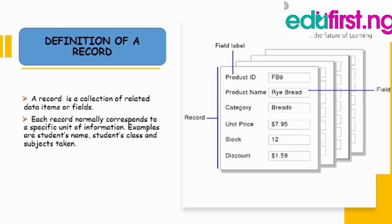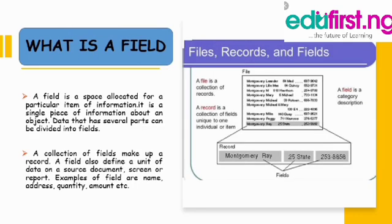Now let's go to a field. A field is a space allocated for a particular item of information. It is a single piece of information about an object. Data that has several parts can be divided into fields. A collection of fields makes up a record. A field also defines a unit of data on a source document, screen, or report. Examples of fields are name, address, quantity, and amount.